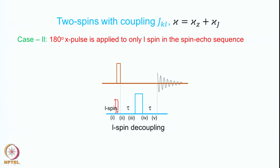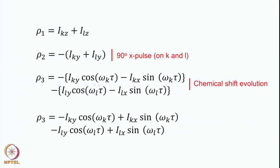If we have included both spins, then we can have the evolution of the L spin as well going on. Both approaches are correct; you can choose whichever way you want. Here we have considered both spins, therefore rho2 is minus Iky plus Ily — the first 90-degree pulse is applied to both K and L spins. Now, what is rho3? Rho3 is the evolution under the chemical shift: minus Iky cosine(omega_K tau) minus Ikx sin(omega_K tau) for the K spin, and minus Ily cosine(omega_L tau) minus Ilx sin(omega_L tau) for the L spin.